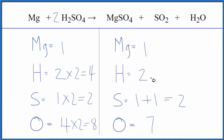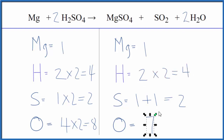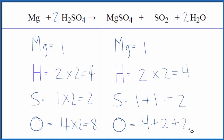Let's balance the hydrogen atoms here. If we put a two in front of the H2O, two times two — that would balance the hydrogens. Let's update the oxygens: we have four plus two, plus the one times two, that gives us eight. We're done. This equation's balanced.